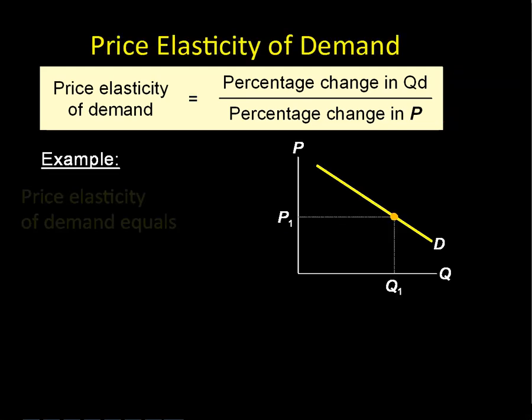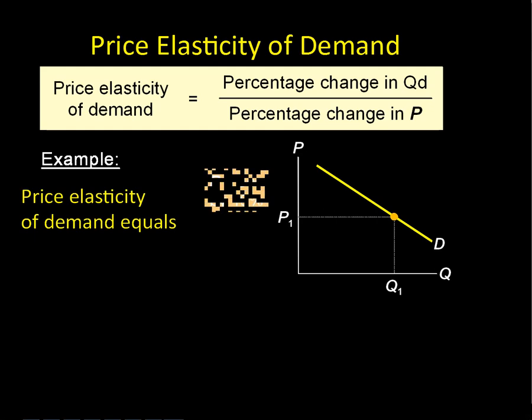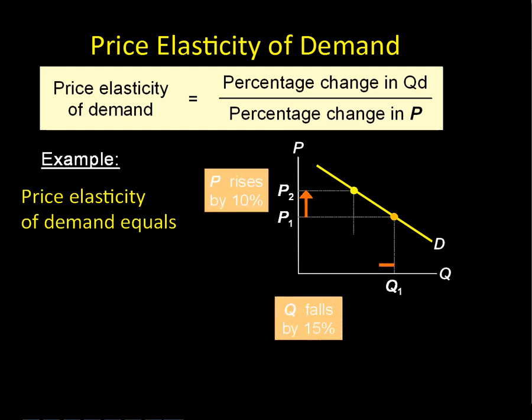Let's do an example. We've got a demand curve, and here we have a 10% increase in price and quantity falling by 15%. We just plug this into the formula — quantity always goes on top since we're measuring how responsive we are to the price change. So it's 15% over 10%, which gives us 1.5, and that means it's elastic.